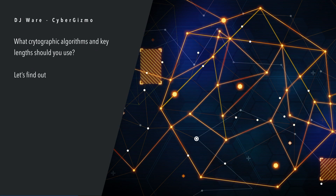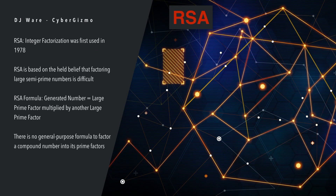So what cryptographic algorithms and key lengths should you use? Let's take a look through all of them. I'm not going to get into all of the math surrounding these different algorithms because some of them are very complex. RSA uses integer factorization and was first used in 1978. RSA is based on the held belief that factoring large semi-prime numbers is fairly difficult to do and isn't easy to replicate. The RSA formula — and this is probably an oversimplification — is that the generated number equals some large prime factor multiplied by another large prime factor.